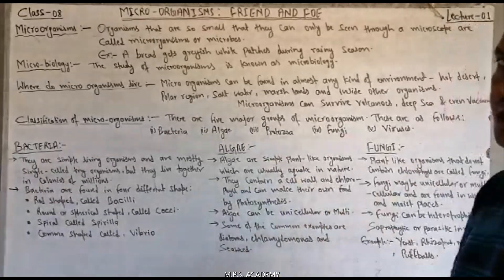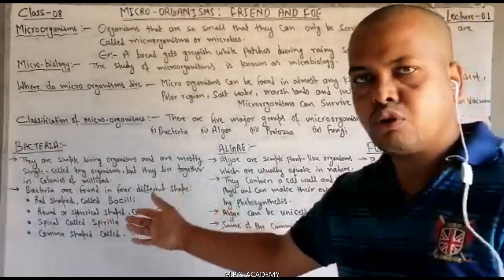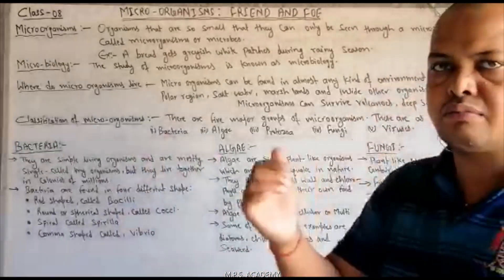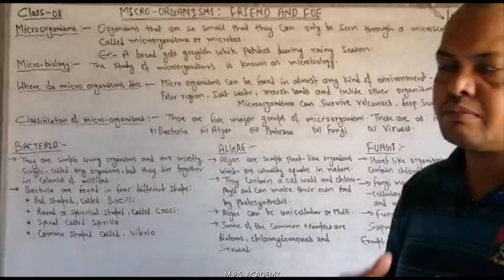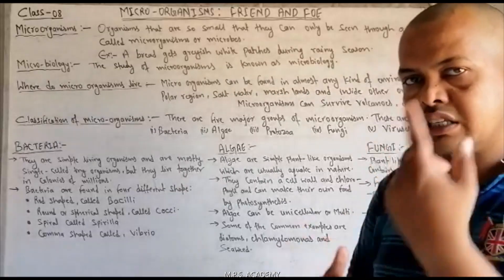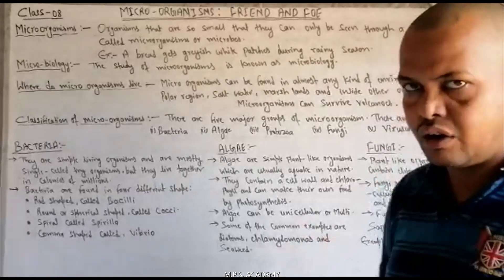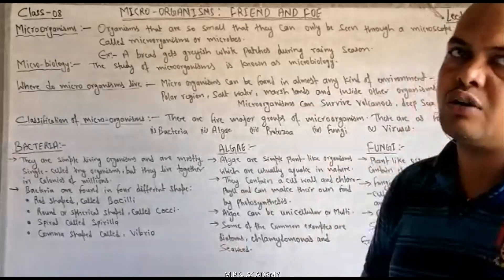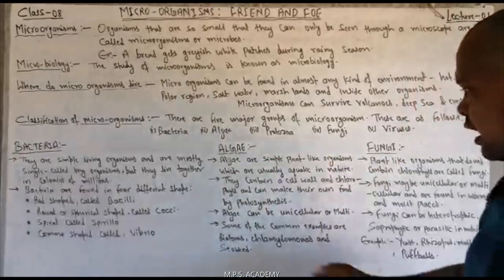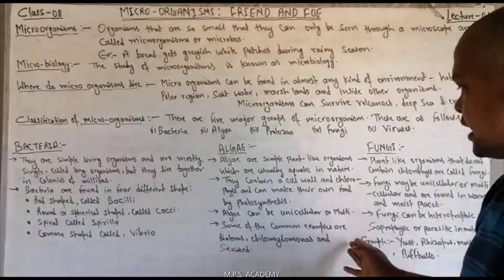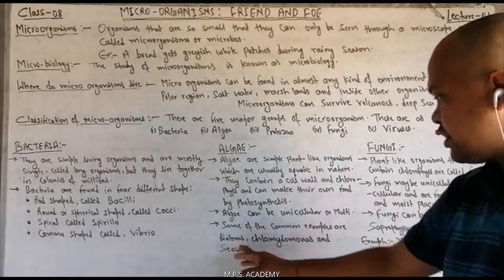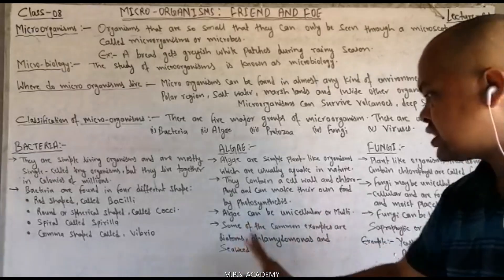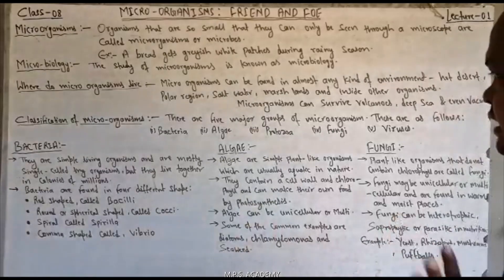Algae can be unicellular or multicellular. Bacteria toh mostly unicellular hote hain, lekin algae unicellular ya multicellular dono ho sakte hain. Unicellular matlab aisa organism jo ek cell se bana ho; multicellular matlab aisa organism jo adhik cells se bana ho. Some common examples of algae are diatoms, Chlamydomonas, and Spirogyra.